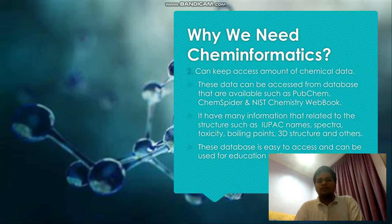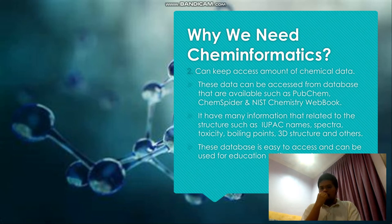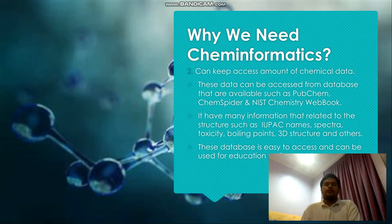Secondly, cheminformatics can keep an excess amount of chemical data. This data can be accessed from available databases such as PubChem, ChemSpider, and NIST Chemistry WebBook. As a chemistry student, I myself always use PubChem because it is very easy to use — you just Google it. For example, if you want to search for butanol or butane, you just type it in Google and there's a link to PubChem.